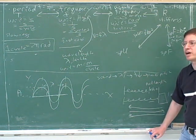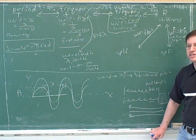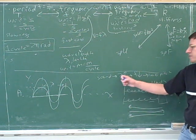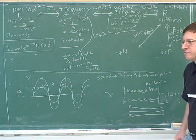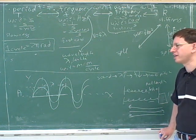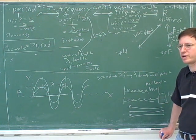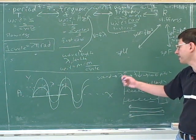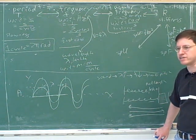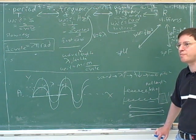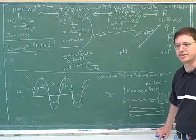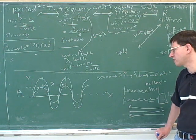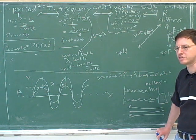Frequency and wavelength are perceived as color. The difference between a red wave and a violet wave is that they have different frequencies and different wavelengths. Red light has about 700 nanometers wavelength and violet light is about 400 nanometers wavelength. So wavelength and frequency of light is perceived as color — color and pitch are actually kind of similar to each other, because they both depend on wavelength and frequency.